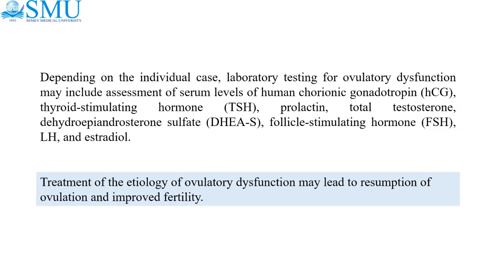Depending on the individual case, laboratory testing for ovulatory dysfunction may include assessment of serum levels of human chorionic gonadotropin (HCG), thyroid-stimulating hormone (TSH), prolactin, total testosterone, dehydroepiandrosterone sulfate (DHEAS), follicle-stimulating hormone (FSH), LH, and estradiol. Treatment of the etiology of ovulatory dysfunction may lead to resumption of ovulation and improved fertility.